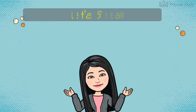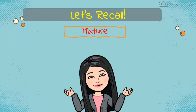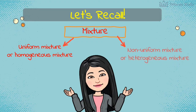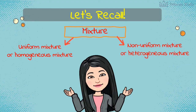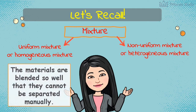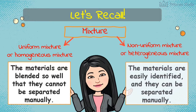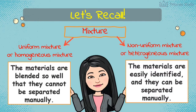Now let's recall our previous lesson. Last time we learned about mixtures and its two kinds: the uniform mixture or homogeneous mixture, and the non-uniform mixture or heterogeneous mixture. In a homogeneous mixture, the materials are blended so well that they cannot be separated manually, while in a heterogeneous mixture the materials can be easily identified and separated manually.